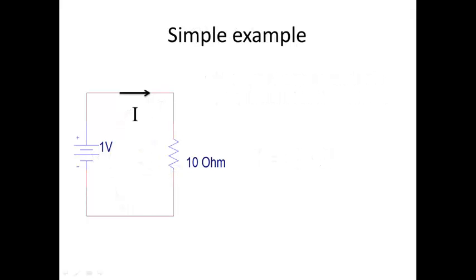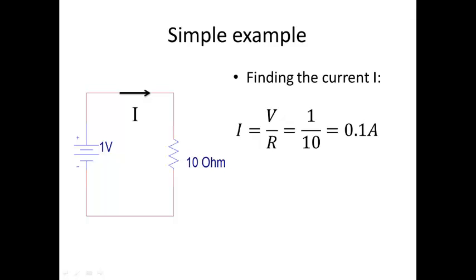Let's solve a simple example. Let's say we have one source that is providing one volt and that source is connected to a 10 ohm resistor. Let's assume that we have the current I flowing in the circuit. We can find the current I by applying Ohm's law to the resistor R — just take the voltage V, in this case one volt, and divide it by the value of the resistance, in this case 10 ohms, and we get 0.1 amps.